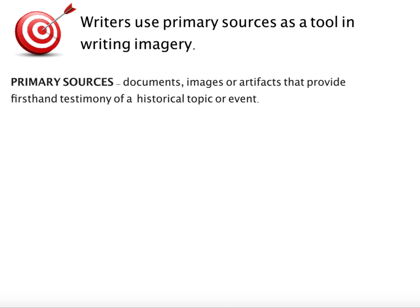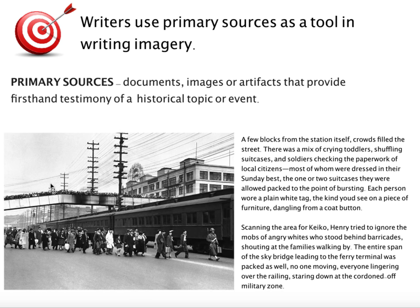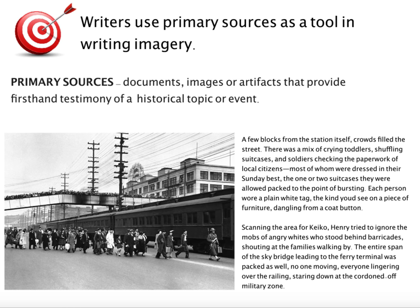Historical fiction often uses primary sources as a tool in writing imagery. Primary sources are documents, images, or artifacts that provide first-hand testimony of a historical topic or an event. Last week, you looked at several different historical photographs that Jamie Ford, the author of Hotel on the Corner of Bitter and Sweet, used as he was trying to capture the moment when Japanese Americans were evacuated to internment camps. What you noticed was that he is pulling lots of details directly from these historical photographs.